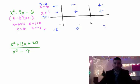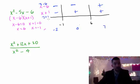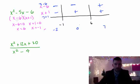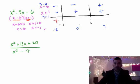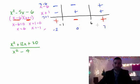Now think about old-school multiplication sign rules: a negative times a negative is positive, a positive times a positive is positive, and a positive times a negative is negative. We're multiplying the sign of (x minus 6) by the sign of (x plus 1). If both are negative we get positive. If one is negative and one is positive we get negative. If both are positive we get positive.